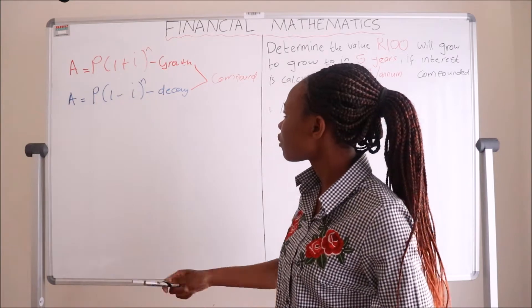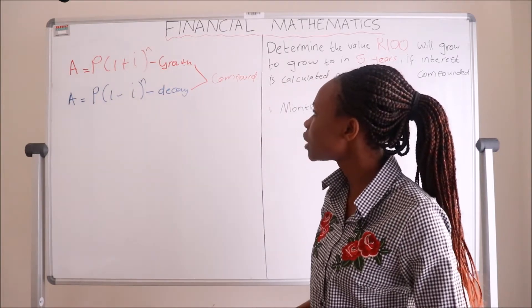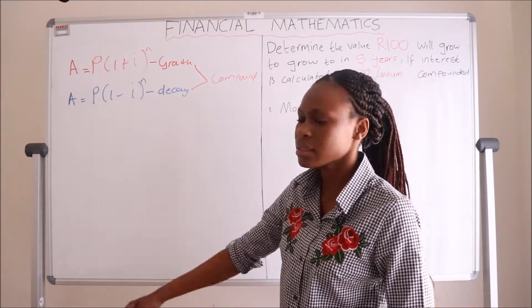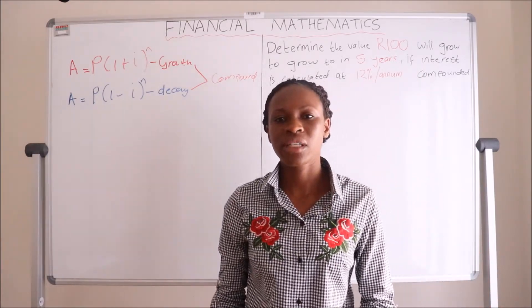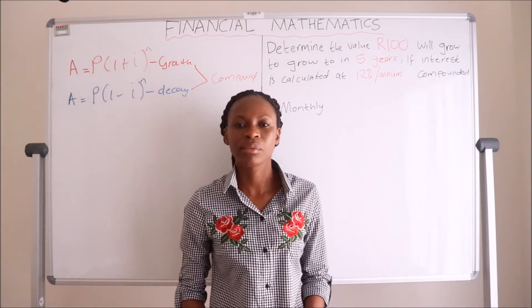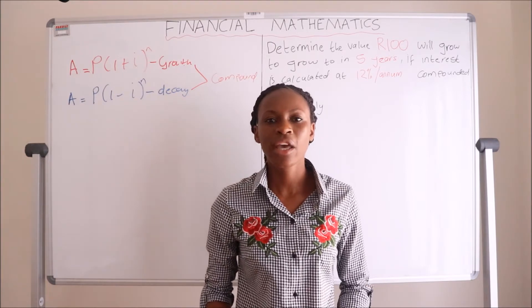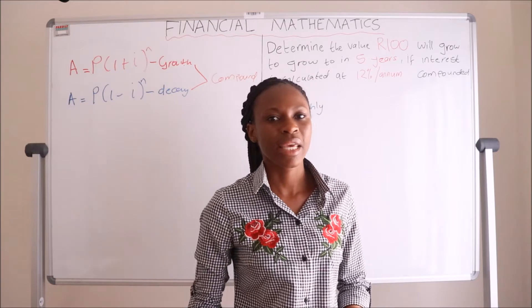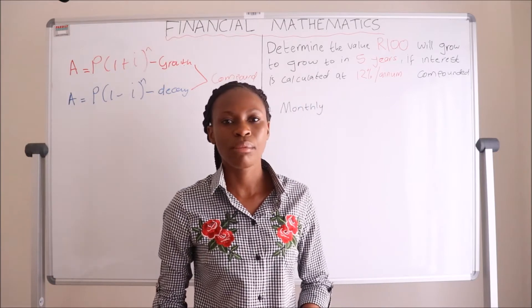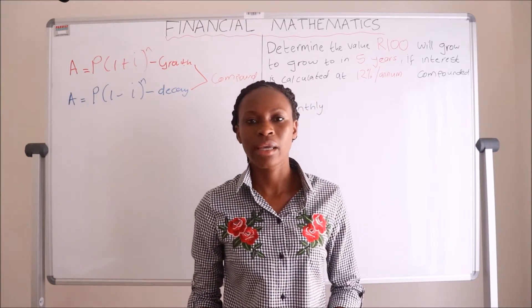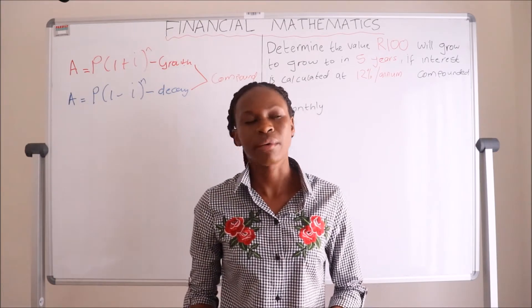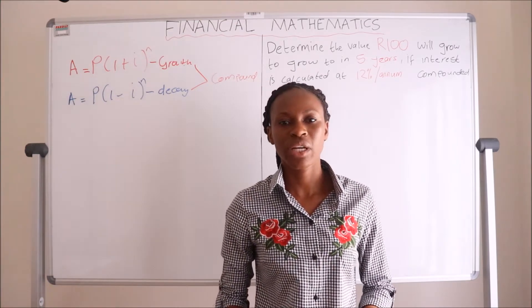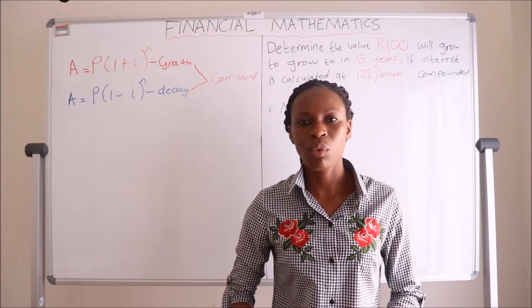From these two equations, we know the first one is for growth which has the positive sign and the second one is for decay which has the minus sign. The effect of different compounding periods in financial mathematics is actually what is mostly used in the real world — that the interest rate is compounded multiple times in the period of a year. In the previous lesson, we were dealing with an interest rate which was only compounded once annually.